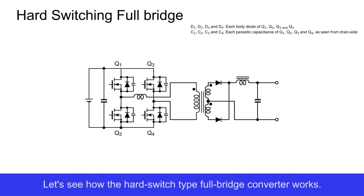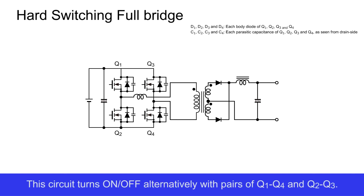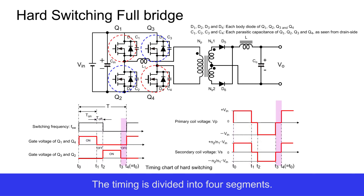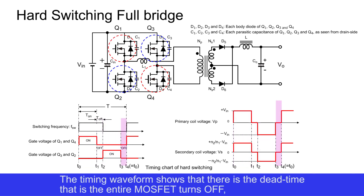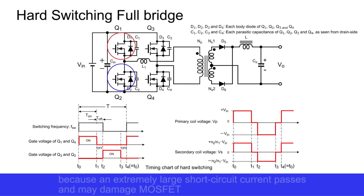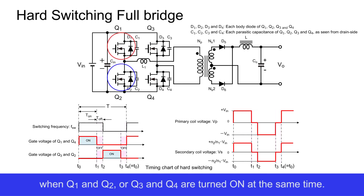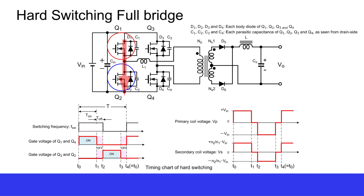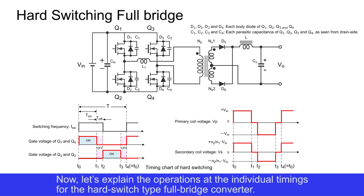Let's see how the hard switch type full bridge converter works. This circuit turns on and off alternately with pairs of Q1 and Q4, and Q2 and Q3. The timing is divided into four segments. The timing waveform shows that there is dead time where all MOSFETs turn off, because an extremely large short circuit current may pass and damage the MOSFETs when Q1 and Q2, or Q3 and Q4 are turned on at the same time.